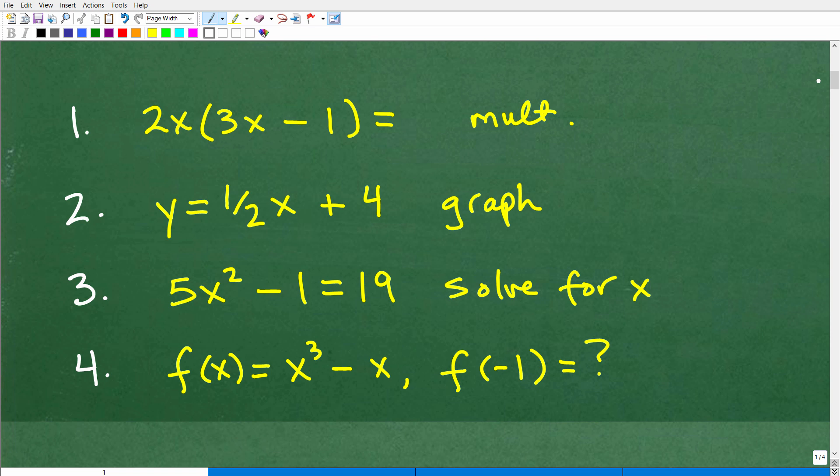But let's take a look at these four problems. So the first is we have 2x, and we want to multiply it by 3x minus 1. So that is our first problem. Our second problem is y equals 1/2 x plus 4. So what I want you to do is to sketch a quick graph if you want to do this problem. Our third problem is 5x squared minus 1 is equal to 19. I want you to solve for x there. And our last problem here is f(x). We have a function f(x) is equal to x cubed minus x. I'd like you to find f of negative 1.